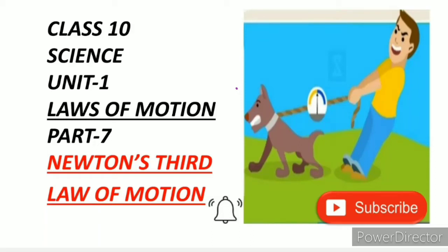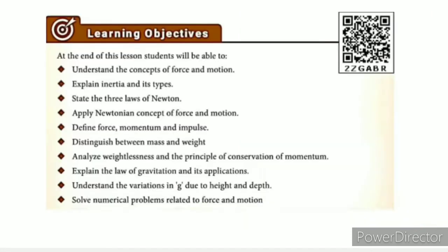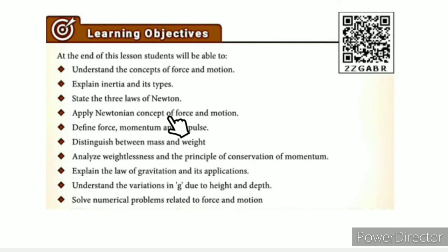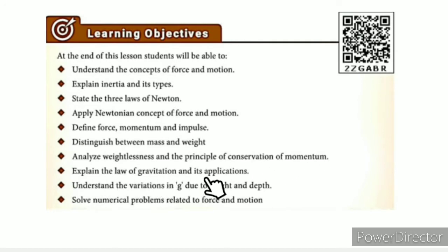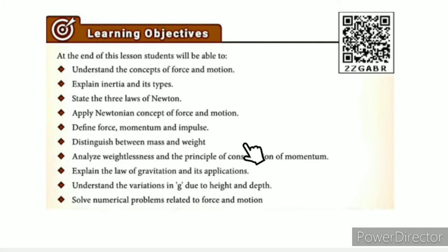Greetings from SS Class 10 Science Unit 1, Laws of Motion, Part 7: Newton's Third Law of Motion. In this lesson, the learning objectives are: understand the concepts of force and motion, explain inertia and its types, state the 3 Laws of Newton, apply Newtonian concepts of force and motion, define force, momentum and impulse, distinguish between mass and weight, analyze weightlessness and the principle of conservation of momentum, explain the law of gravitation and its applications, understand variation in G due to height and depth, and solve numerical problems related to force and motion.